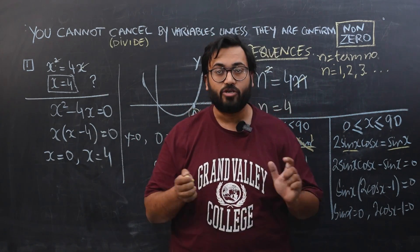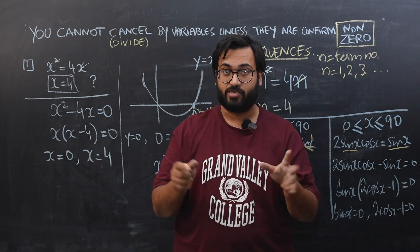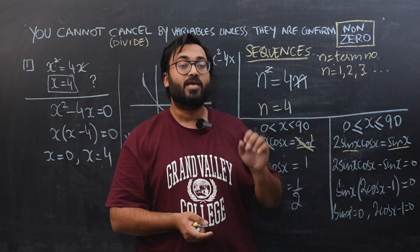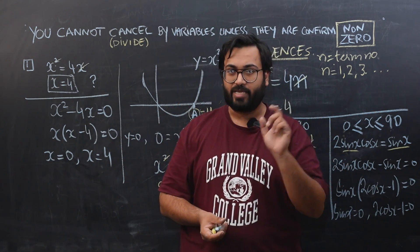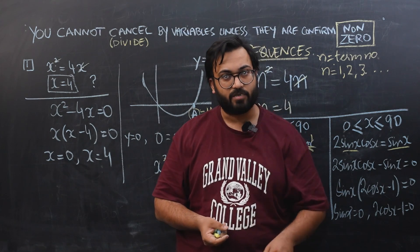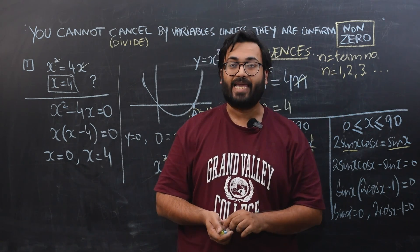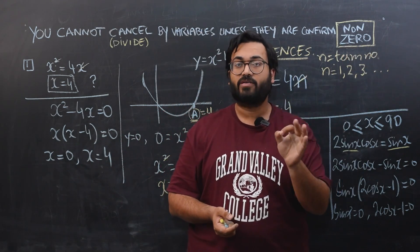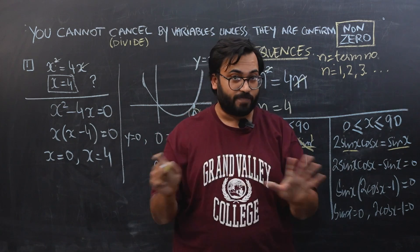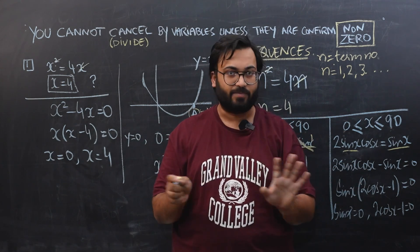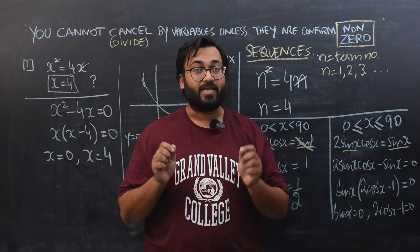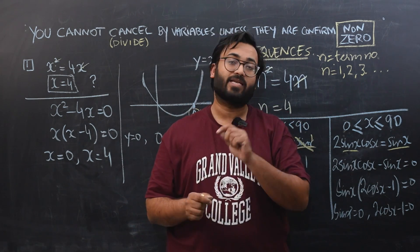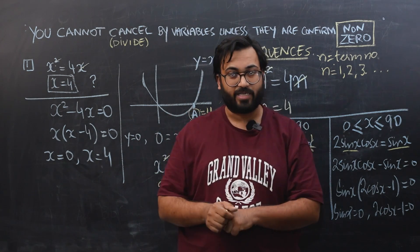These are a handful of examples, and there are many more where we cannot cancel variables. You have to be really attentive about this. I always tell my students: whenever you are cancelling with a variable term, check the entire question — is there a hint that the variable can never be zero? If you can find evidence it cannot be zero, you are comfortable to cancel. If there is no such hint, bring all terms to one side, factorize, and solve.